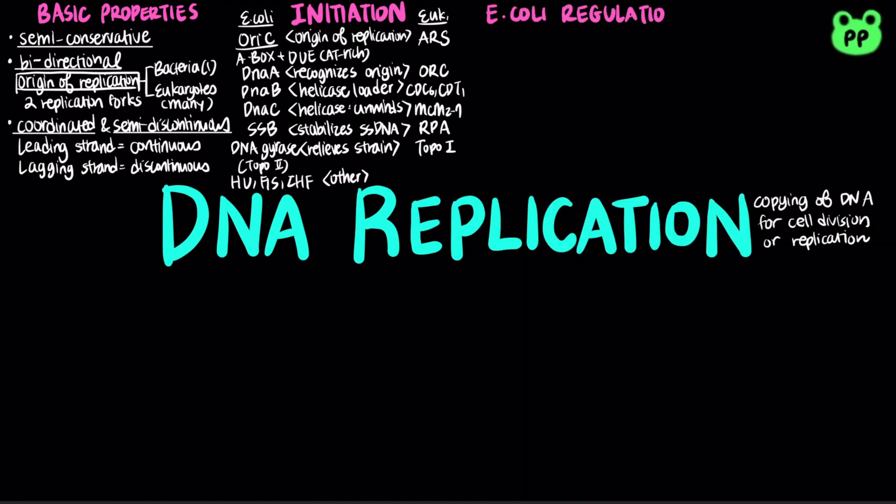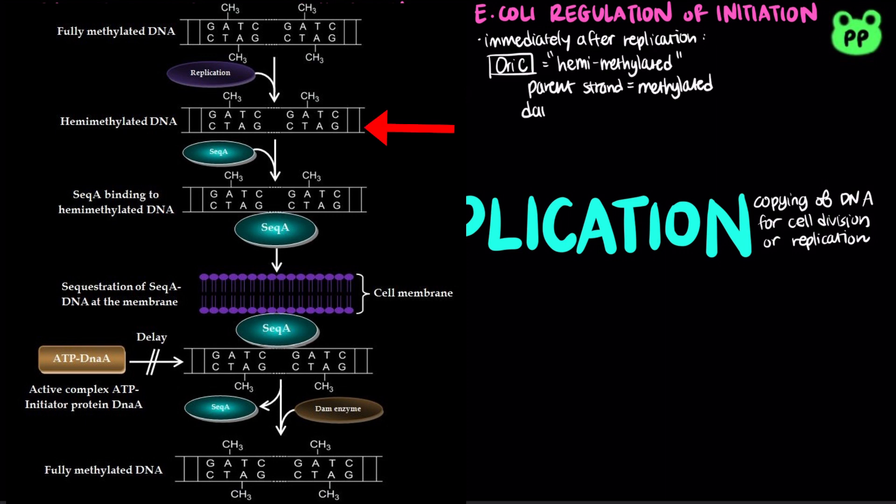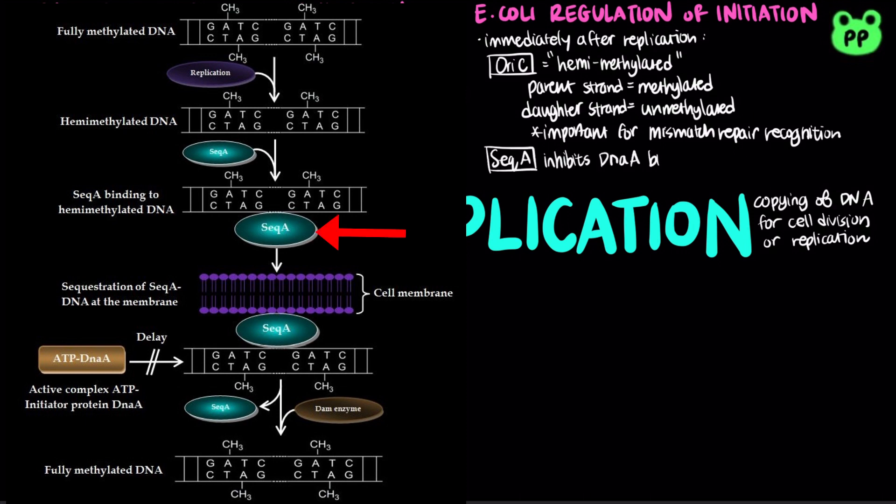Bacterial initiation and replication is regulated by DNA methylation. Immediately after replication, the oriC is hemimethylated, which means that the parent strands are methylated while the new strands are not. This methylation pattern is also important for mismatch repair recognition, which will be talked about in a future video. The protein SeqA or sequestration factor A will temporarily inhibit DnaA binding and thus prevent over-replication.